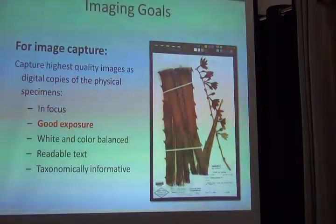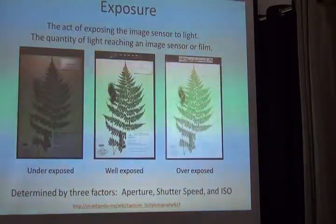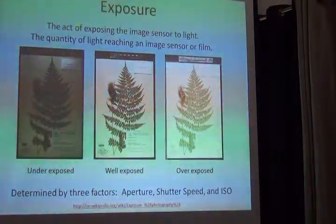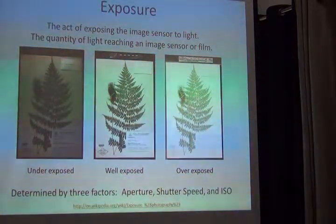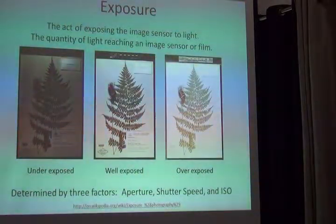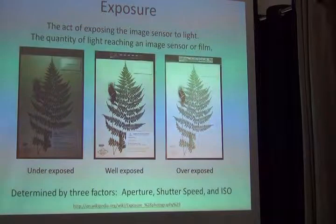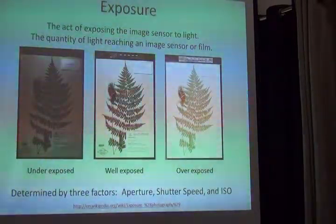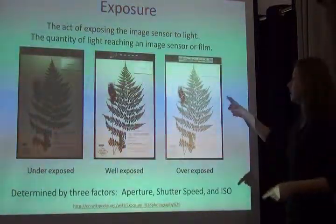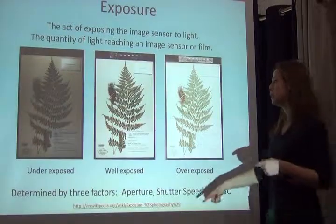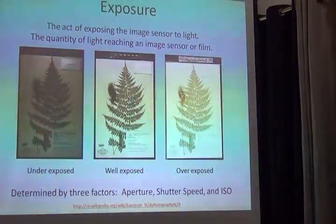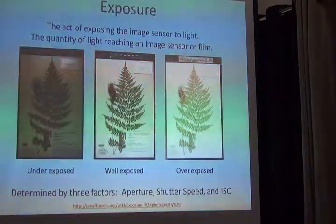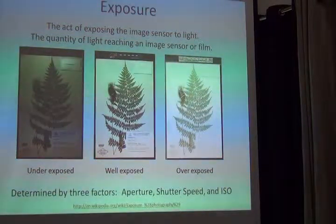The next goal is to make sure the specimen has good exposure. Exposure has several definitions. It can be the act of exposing the image sensor to light, or the quantity of light reaching that sensor. An image that's very dark is underexposed; one that's too light where we lose highlight details is overexposed; and one illuminated just right is well exposed. Exposure is determined by three factors: aperture, shutter speed, and ISO.